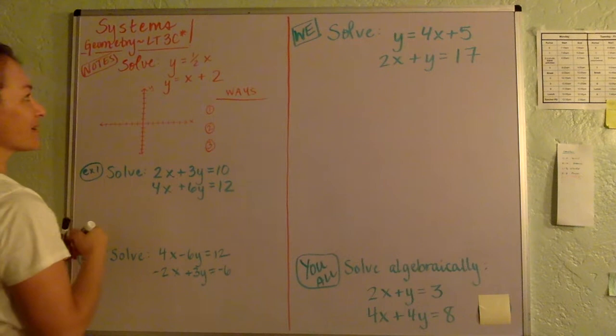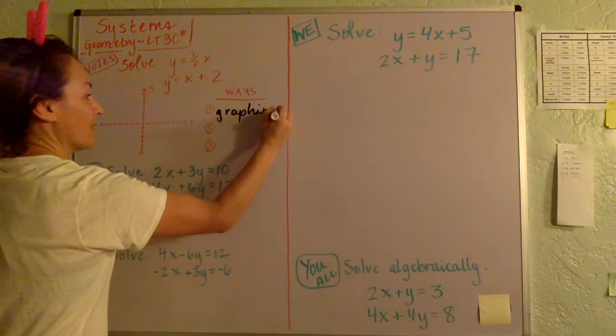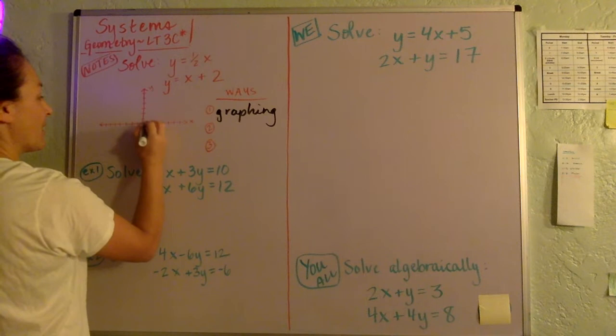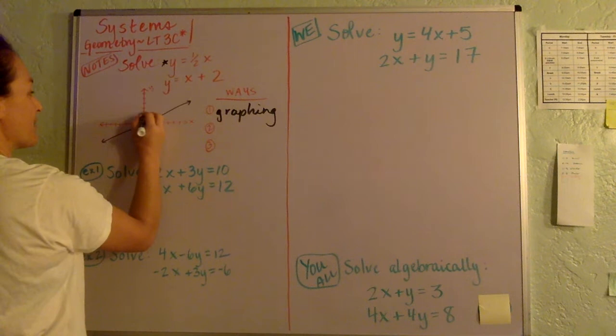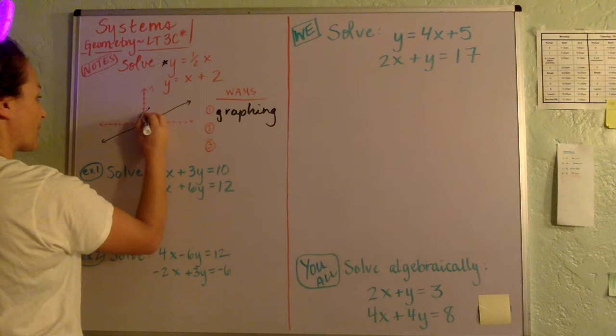So the first way you can solve is by graphing, which I just want to show you here. Y equals 1/2 X. So you'd go up 1 and over 2, right? And here's what that line would look like. And then Y equals 1X plus 2. You'd start up at 2 and then you'd go up 1 and over 1 because that's the slope.